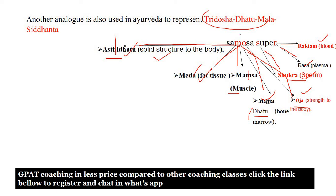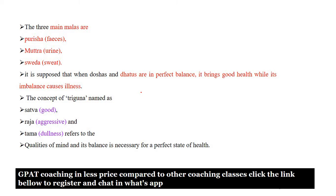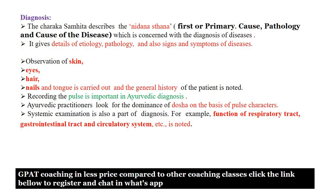The three main Malas (excretions) from the body according to Ayurveda are Purisa (feces), Mutra (urine), and Sweda (sweat). It is supposed that when Doshas and Dhatus are in perfect balance, we enjoy good health. Whenever there is imbalance, we get illness. The concept of three Gunas: Sattva means goodness, Raja means aggression, and Tama means dullness — these are qualities of mind. Imbalance between Sattva, Raja, and Tama causes health problems.